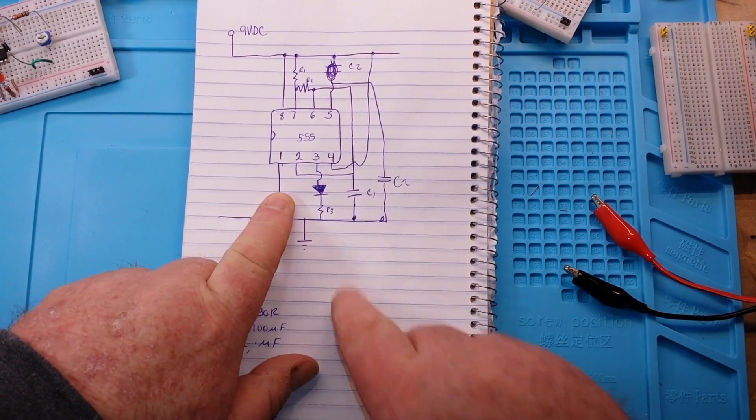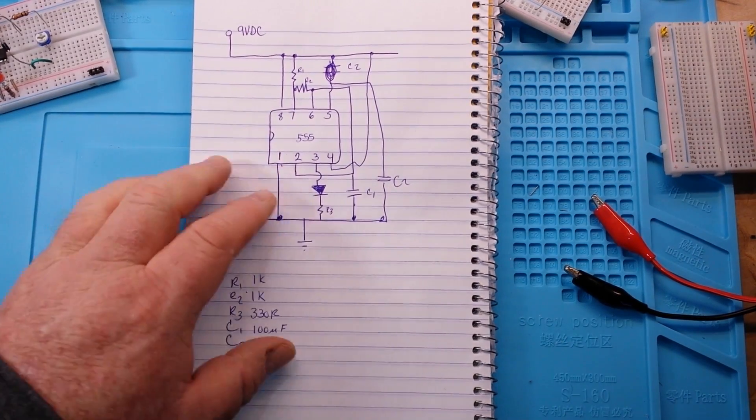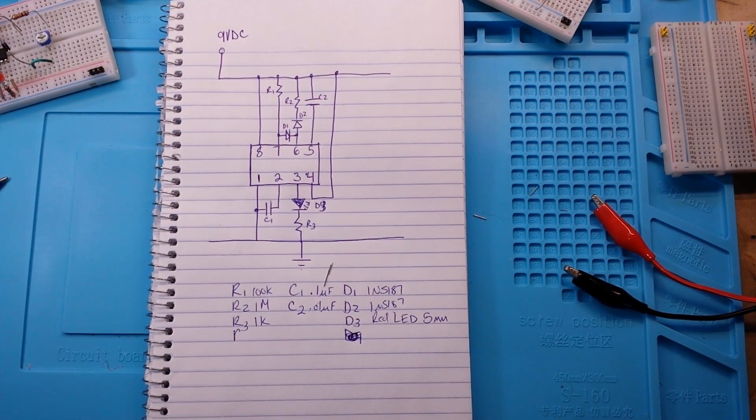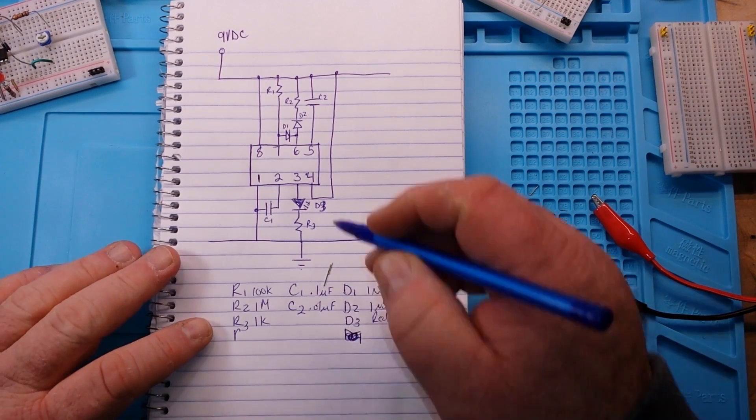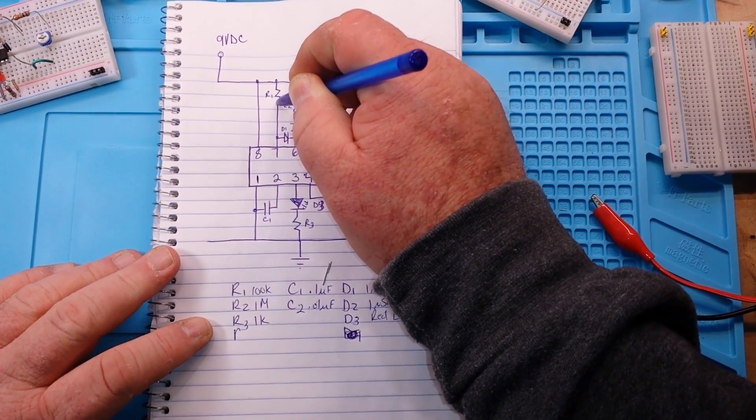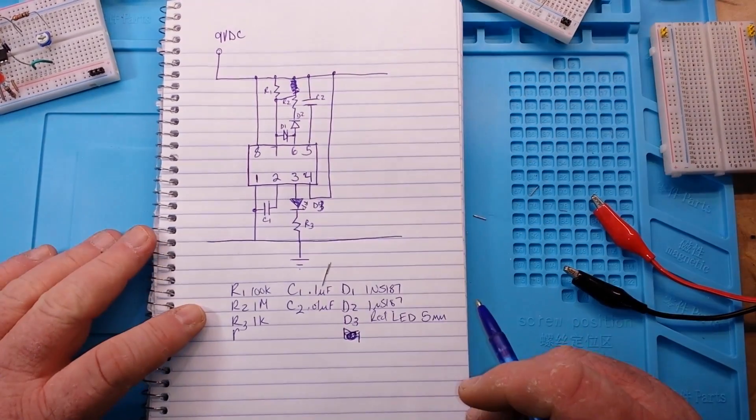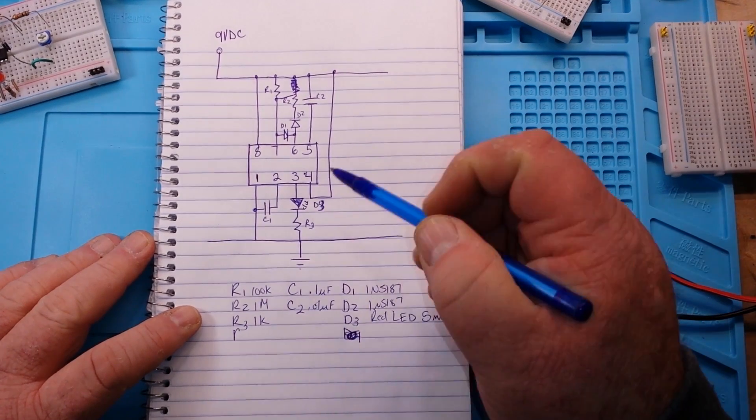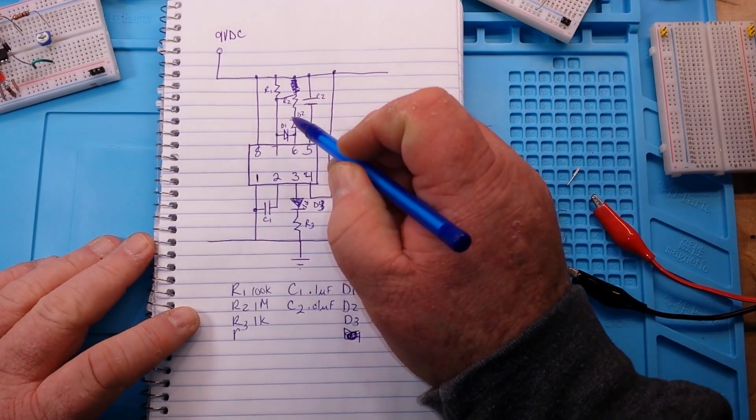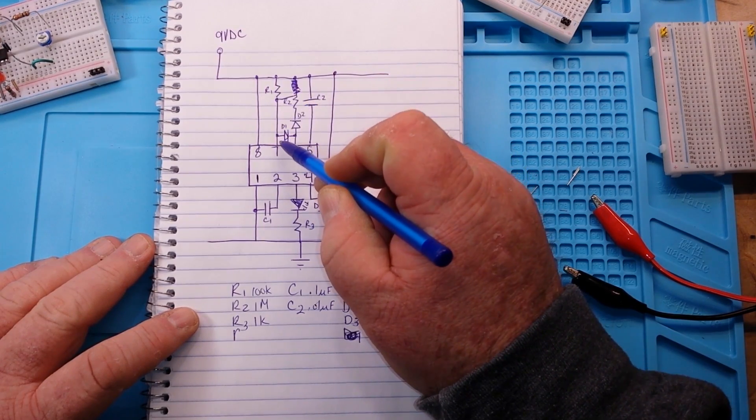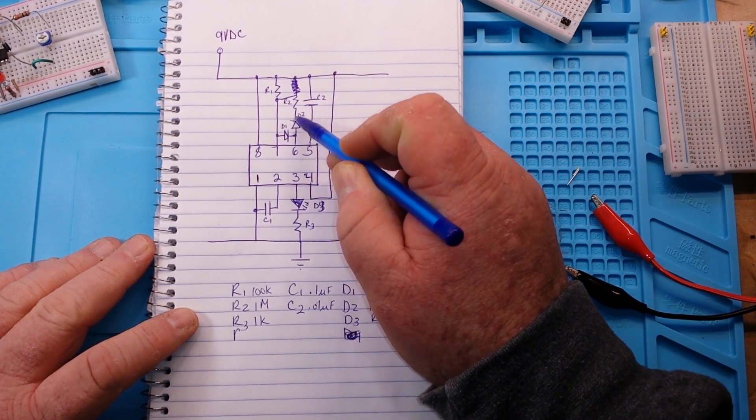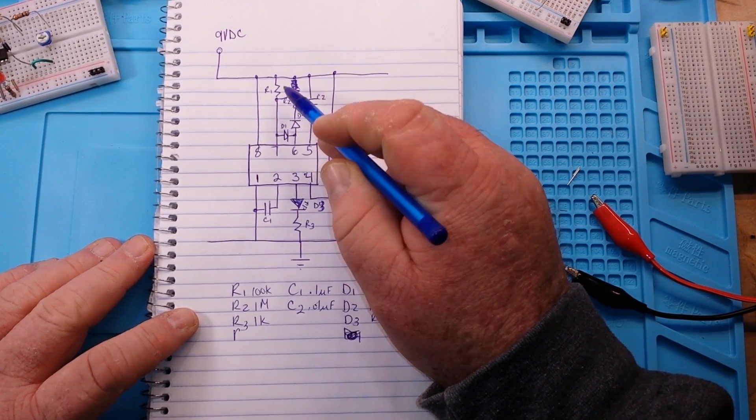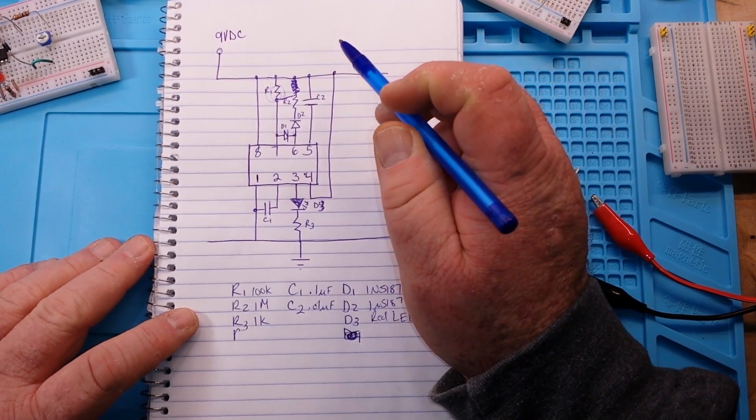Here is our standard astable multivibrator profile which you just looked at. Now if we flip it over, you guys get the idea. All we've done here is, if you look, we've added two diodes.